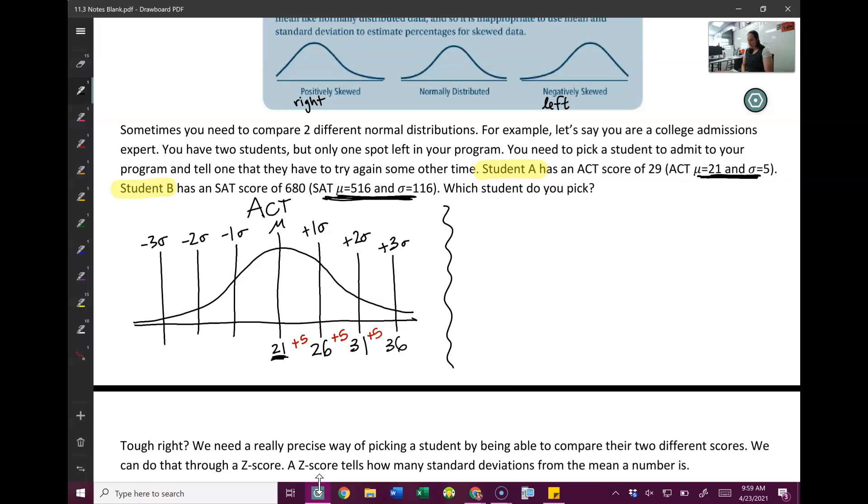Excellent. And we can go the other way, minusing standard deviation. So this time minus five, 21 minus five is 16. Minus a second standard deviation gets me to 11. And then minus a third standard deviation is a score of six.